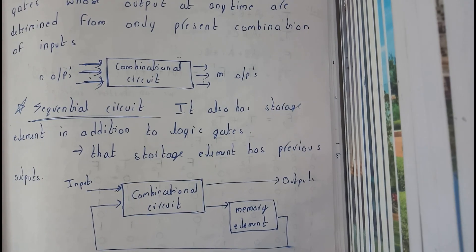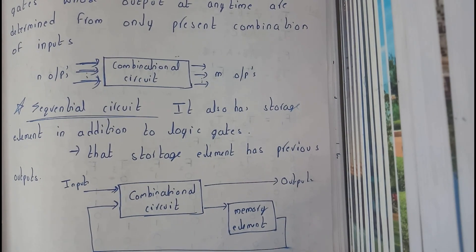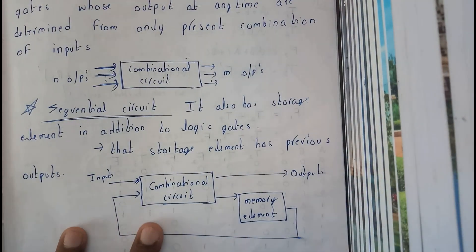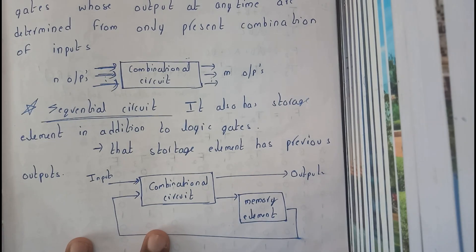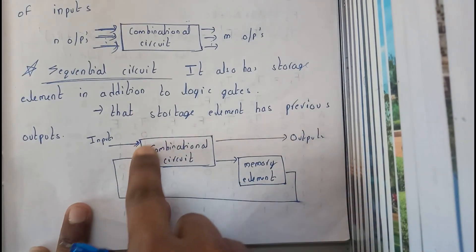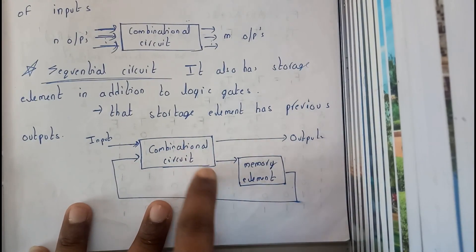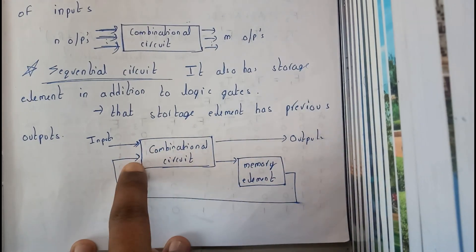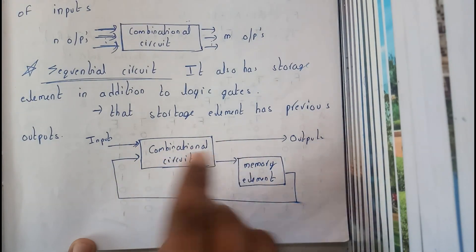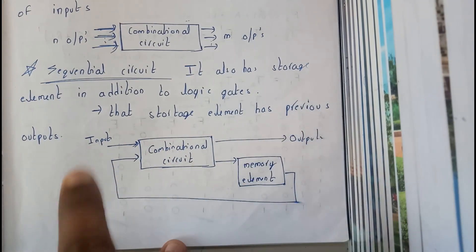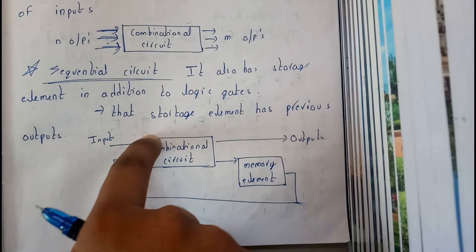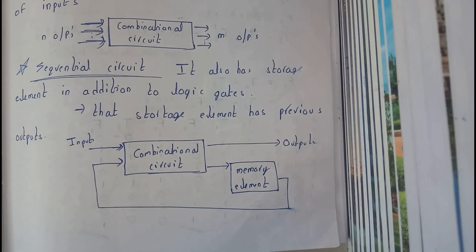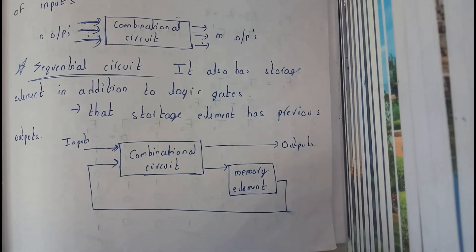Now let us go through the sequential circuit. A sequential circuit also has an extra storage element in which the previous output is stored. It is essentially a combinational circuit with memory — the memory stores the previous output and it is given as an input back to the combinational circuit. So the output of a sequential circuit depends on the previous output plus the present input.